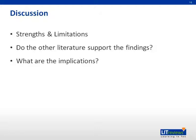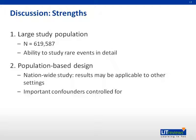My name is Geraldine, and I will be continuing with the discussion of the strengths and limitations of this paper, looking at other literature to see if they support the findings discussed earlier, and the implications of this paper. Some of the strengths include the use of a very large study population — more than 600,000 subjects — giving the authors the ability to study rare events in detail. Another strength is the population-based, nationwide design, meaning the results may be applicable to other settings.